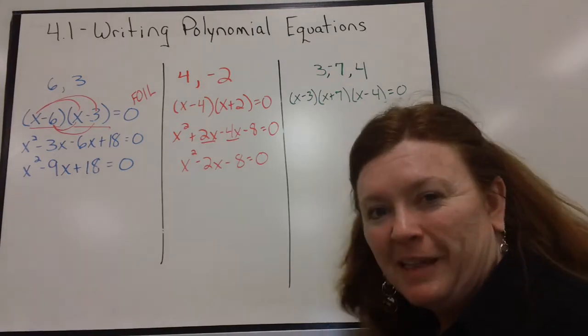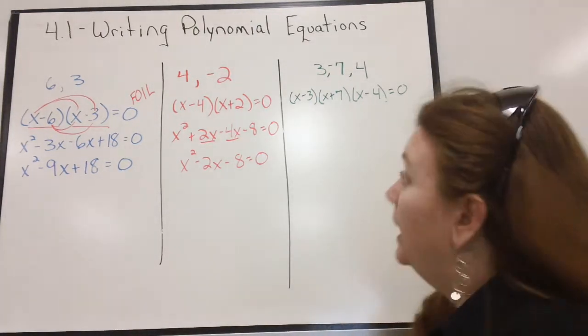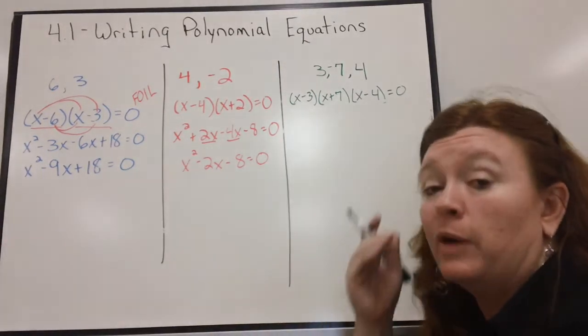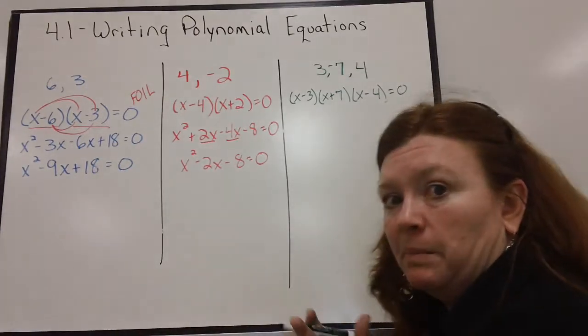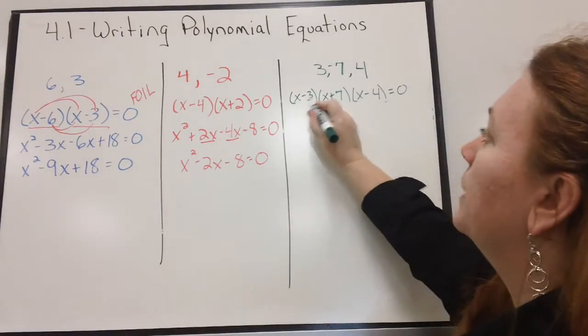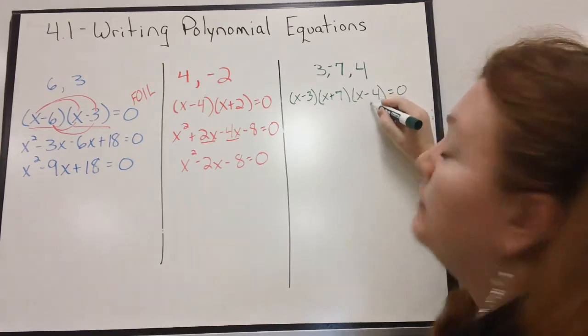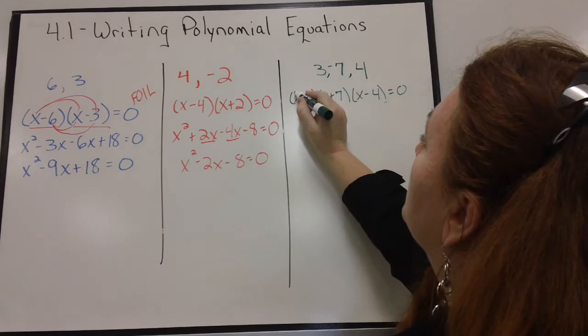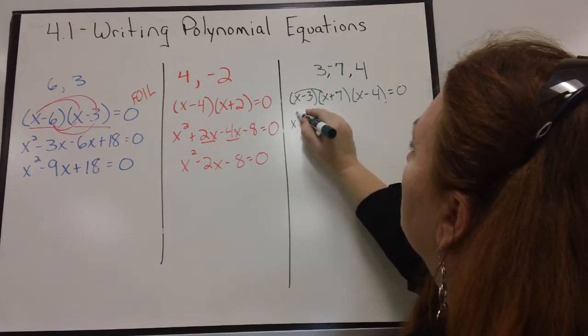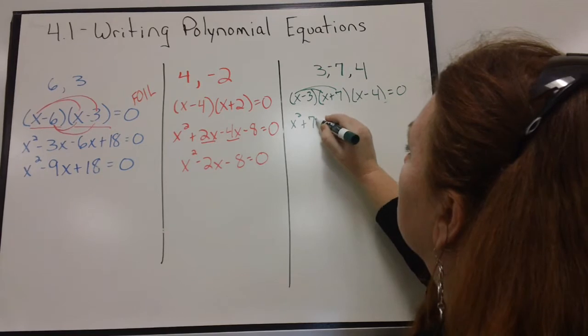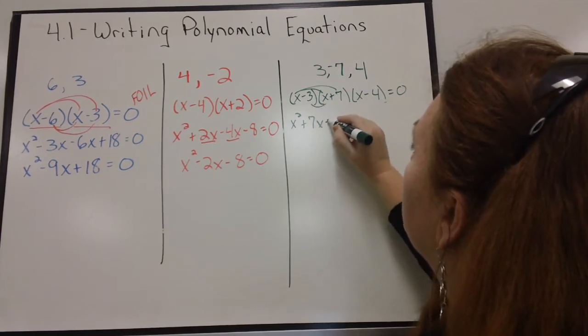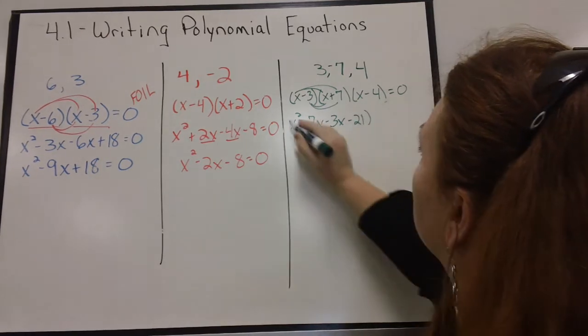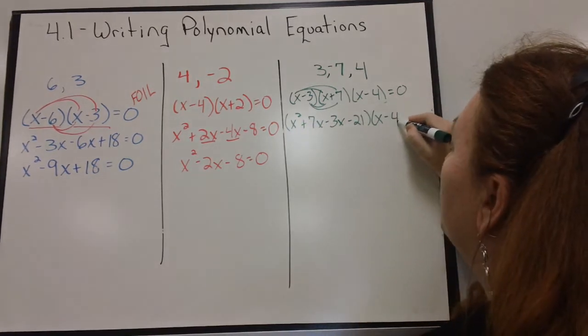How do I multiply these? Pick any 2, and in this case, it really doesn't matter. So I kind of like to usually pick the first one and the second one. Parentheses. So pick any 2 and multiply them out. So I'm going to multiply these 2 together. And I'm going to leave the X minus 4 alone for now. Now, first, X times X is X squared. Outer is 7X. Inner is negative 3X. And last is a negative 21. I still have the X minus 4. I haven't touched that yet.